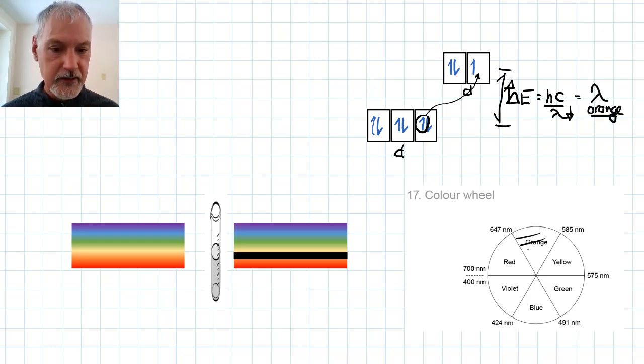So these are the colors that are removed. So when we shine white light in on our sample of a copper sulfate solution, the spectrum of colors come out with the orange missing. This is removed or absorbed to help promote our electron up.